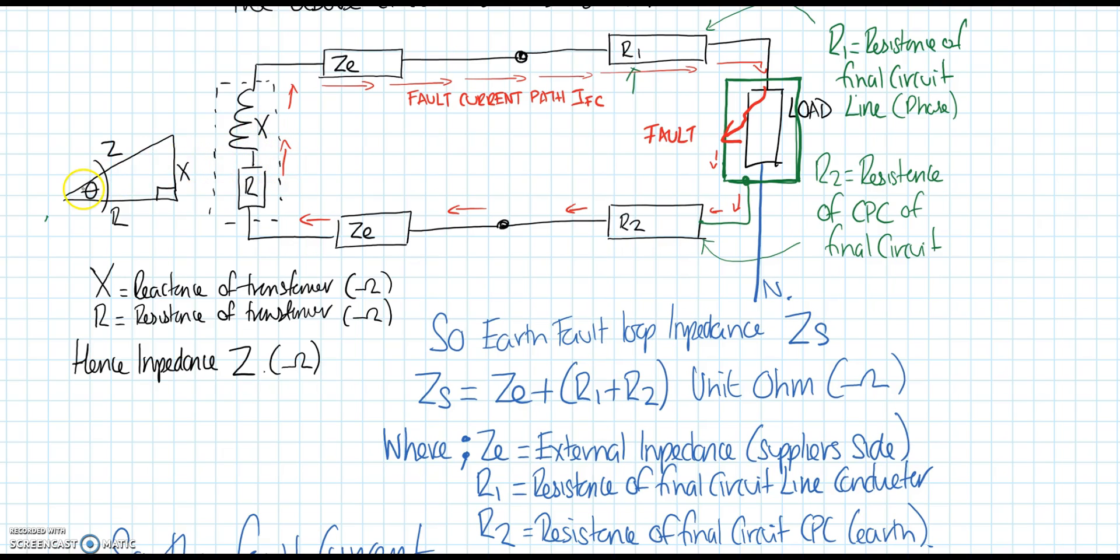Ze is the suppliers impedance of their line. This starts pretty much as it enters the building, from our intake. Our R1 conductor goes from our distribution board into our load. Here we have an earth fault—there's a breach under the live casing.